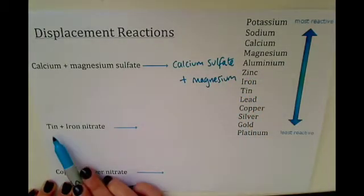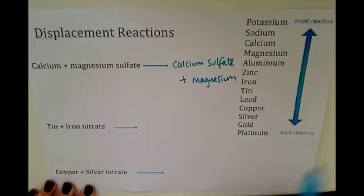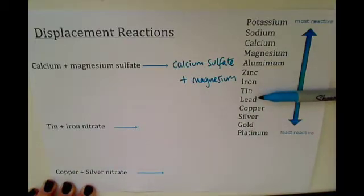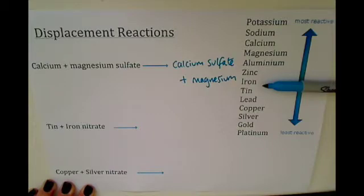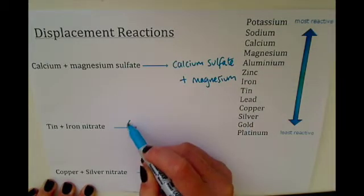In this example, the metals are tin and iron. Tin is below iron on the reactivity series. Therefore, this reaction would not happen.